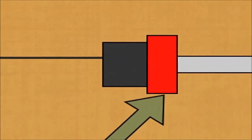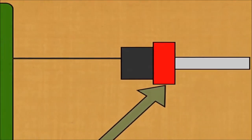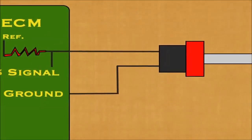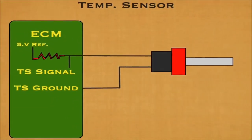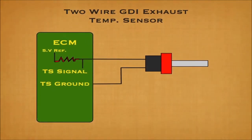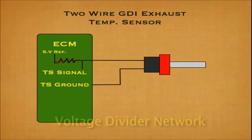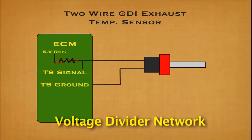The GDI exhaust gas temperature sensor has either one or two wires. It is a simple linear temperature coefficient sensor employing a thermistor device. The one-terminal sensor is grounded at the body and is rarely seen today — these were used in early GDI engines. The two-terminal sensor has a ground and a signal wire. This sensor works together with an internal resistor inside the ECM, and both form a voltage divider network where the reference voltage is split between the two.